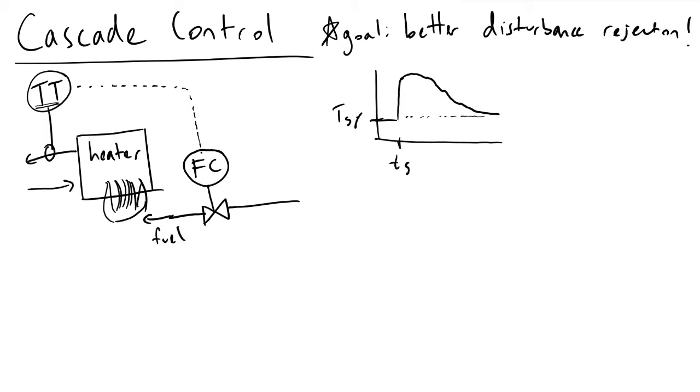What we get with cascade control is if we make use of an additional piece of information, such as the flow rate of the fuel, and we feed this information to our controller as well, we can implement nested feedback loops and realize much better disturbance rejection. We would return back to our desired set point value for our temperature much more quickly.